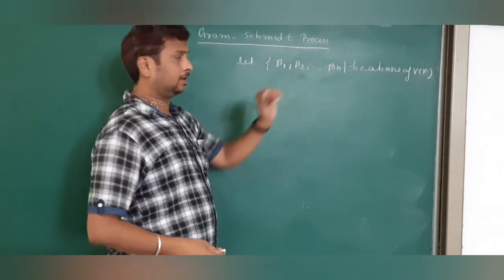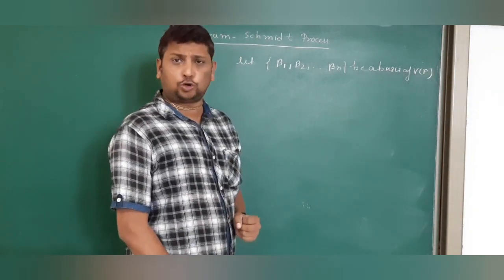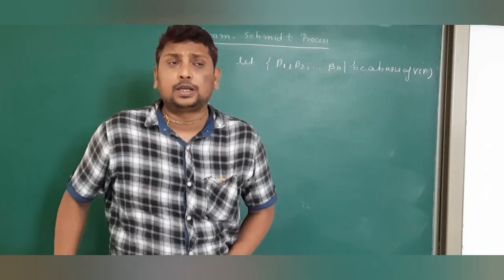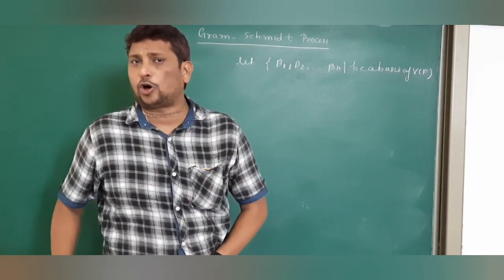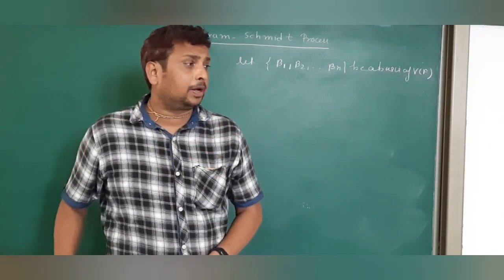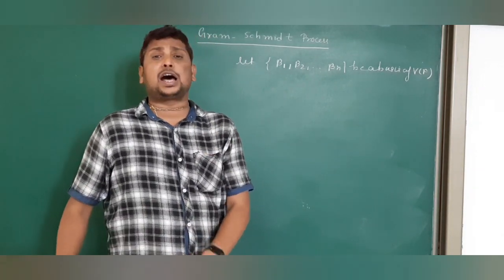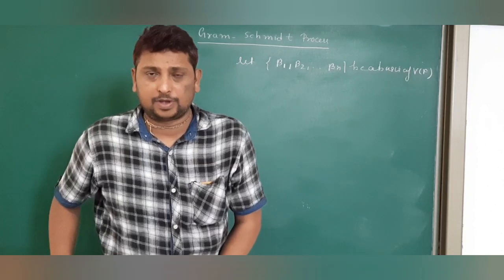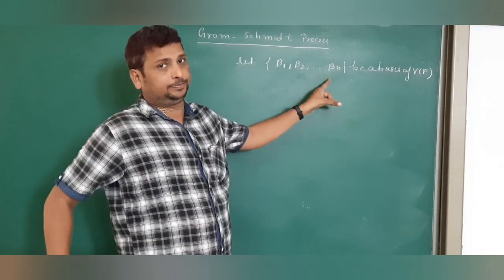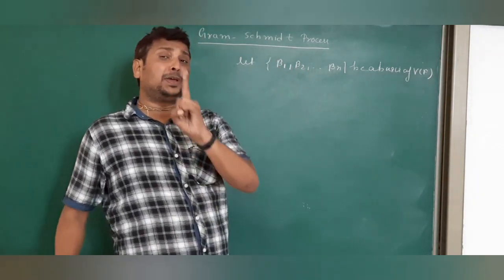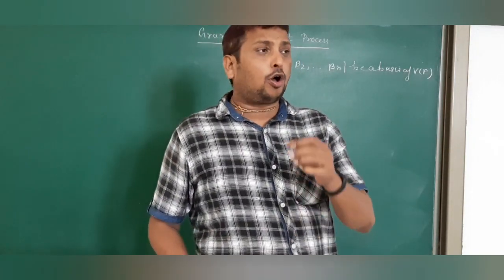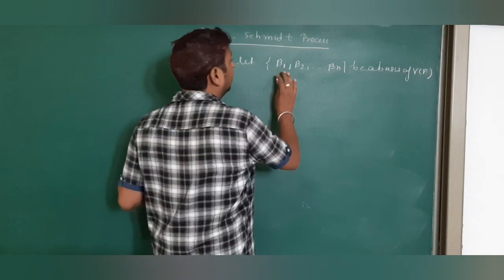Both basis is given and we have to construct the corresponding orthonormal basis. First of all, keep in mind what is an orthonormal basis. A basis is called orthonormal if vectors are pairwise orthogonal — that means if this is an orthonormal basis then they are pairwise orthogonal first, and the norm must be one.